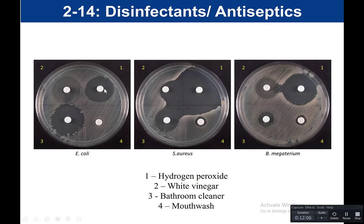Disc number one was soaked in hydrogen peroxide, and it's very effective — in all three cases it inhibited E. coli, Staph aureus, and Bacillus megaterium. For white vinegar, there is some effectiveness but definitely not to the extent of hydrogen peroxide. You would measure and record whether each result is sensitive or resistant, though without a ruler it's difficult to determine exactly. For Bacillus megaterium, the bacteria grew right up to the disc, so this would be resistant.